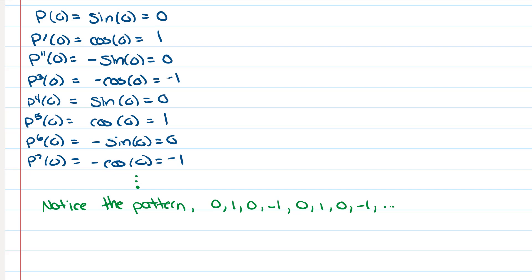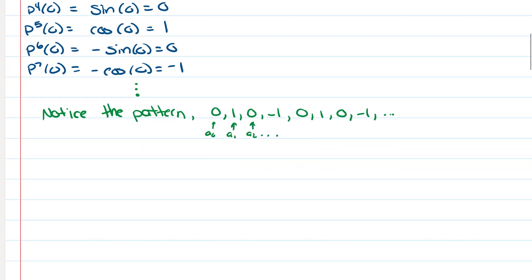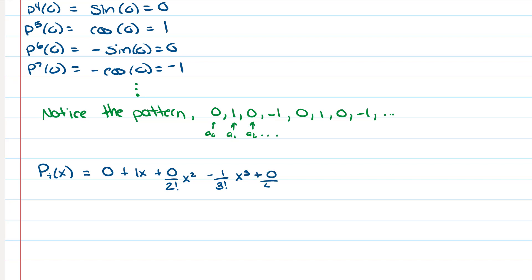Now we write the Taylor polynomial using these values as coefficients a₀, a₁, a₂, and so on. So we get P₇(x) = 0 + 1·x + 0/(2!) · x² − 1/(3!) · x³ + 0/(4!) · x⁴ + 1/(5!) · x⁵ + 0·x⁶/(6!) − 1/(7!) · x⁷, and we could keep that pattern going on forever.